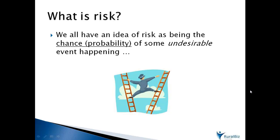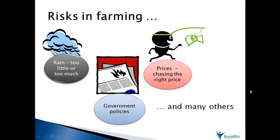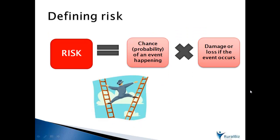Which leads us to risk. We've all got an idea that risk is a chance — or now we call it probability — of some undesirable event occurring. In farming we face a lot of risks. In this video we're really only talking about climate risk, but there are many other risks involved in successful farm management. The actual definition of risk, to work it out mathematically, is to multiply the chance or probability of an event happening by the damage or loss that we would incur if that event happens.